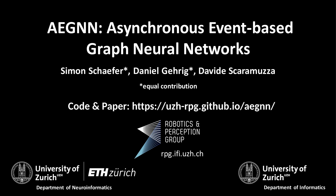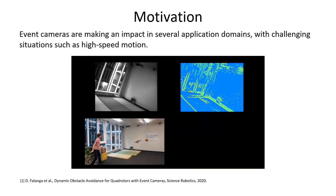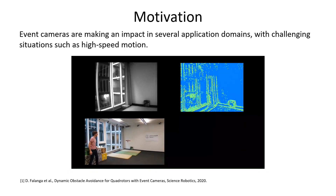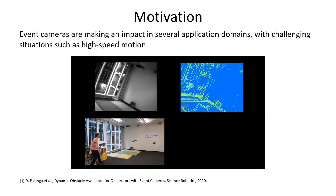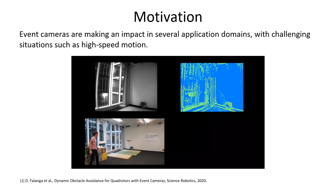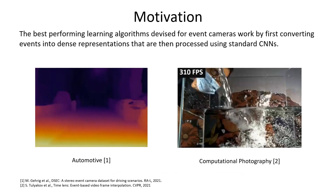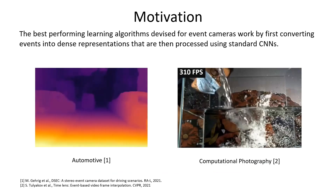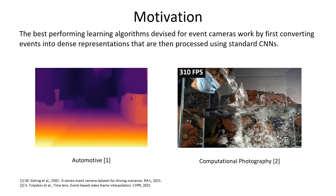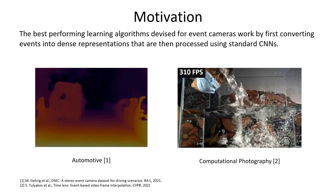AGNN – Asynchronous Event-Based Graph Neural Networks. Event cameras are making an impact in several application domains with challenging situations such as high-speed motion. One of the key challenges to unlock their full potential is to find a computationally efficient yet accurate event representation. The best performing learning algorithms devised for event cameras today work by first converting events into dense representations such as event histograms that are then processed using standard CNNs.